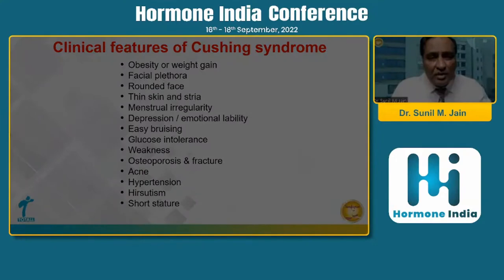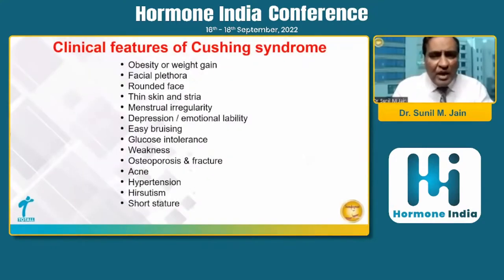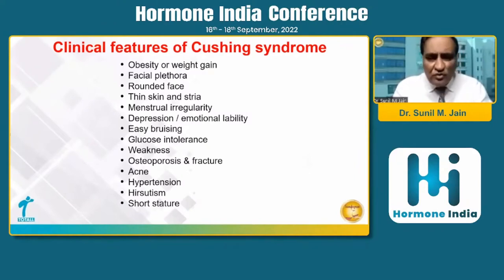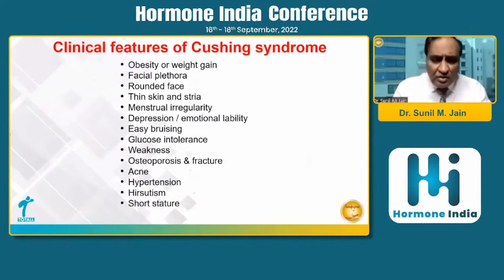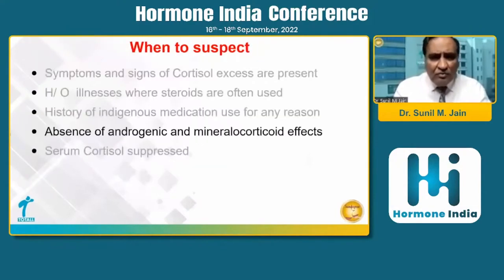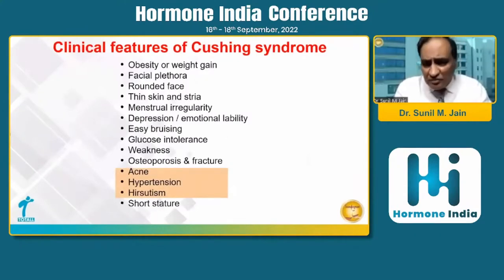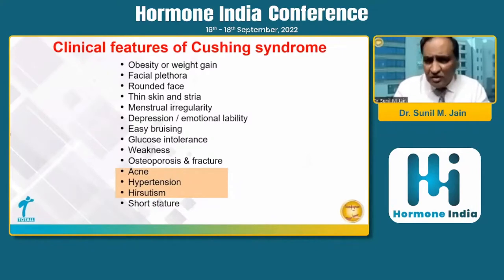These are the well-known clinical features of Cushing's syndrome. When a patient comes to us, we will have to manage their obesity, osteoporosis, and the features of cortisol excess. Since it is iatrogenic Cushing's, the symptoms that are absent will be androgenic and mineralocorticoid effects. Hence these patients won't have hypertension, hirsutism, or acne — features which are very often present in endogenous Cushing's syndrome.